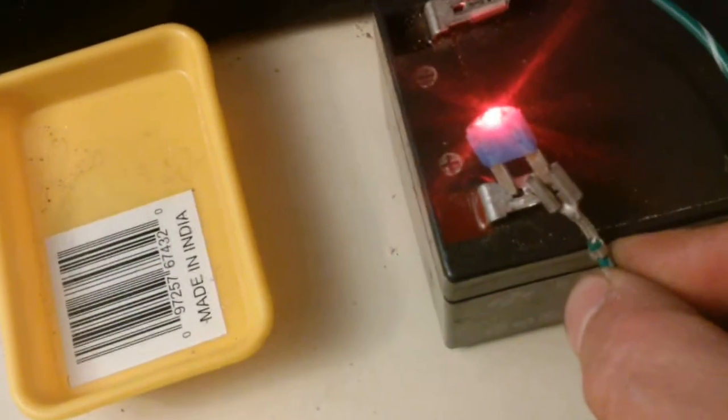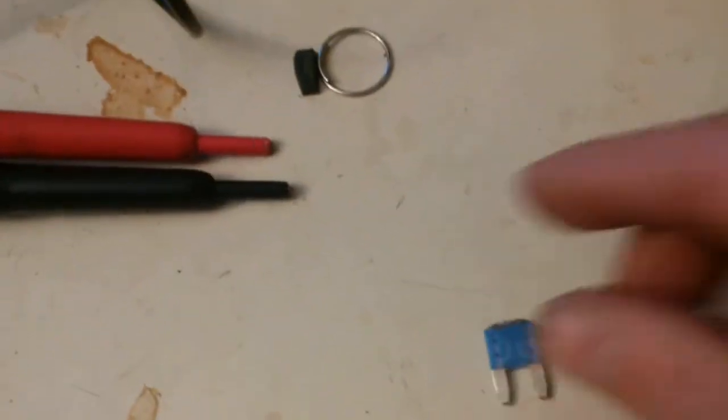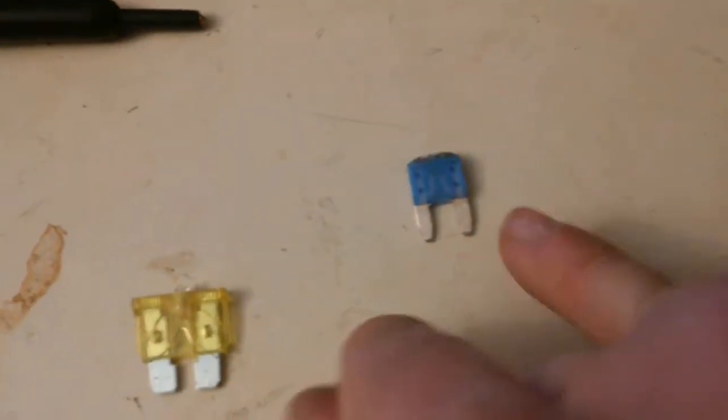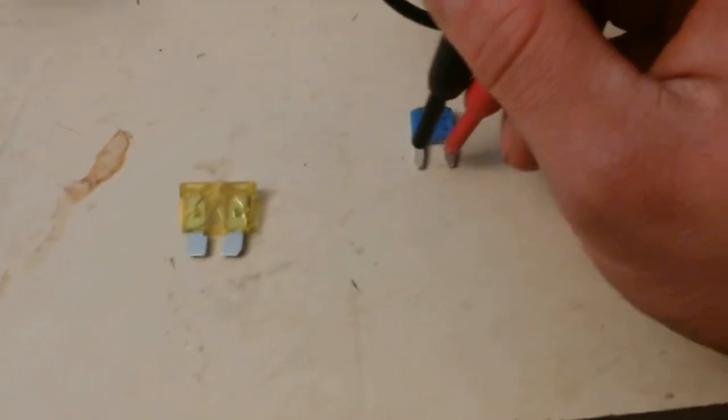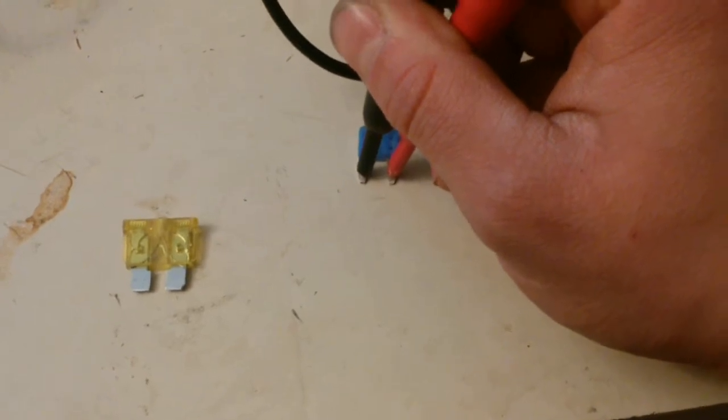We're going to connect it and you see it glows here. Now as soon as it blows, it shouldn't allow any power across the terminals. So I've got my little electrical connector tester over here and we're just going to go across the two leads and there's nothing there.